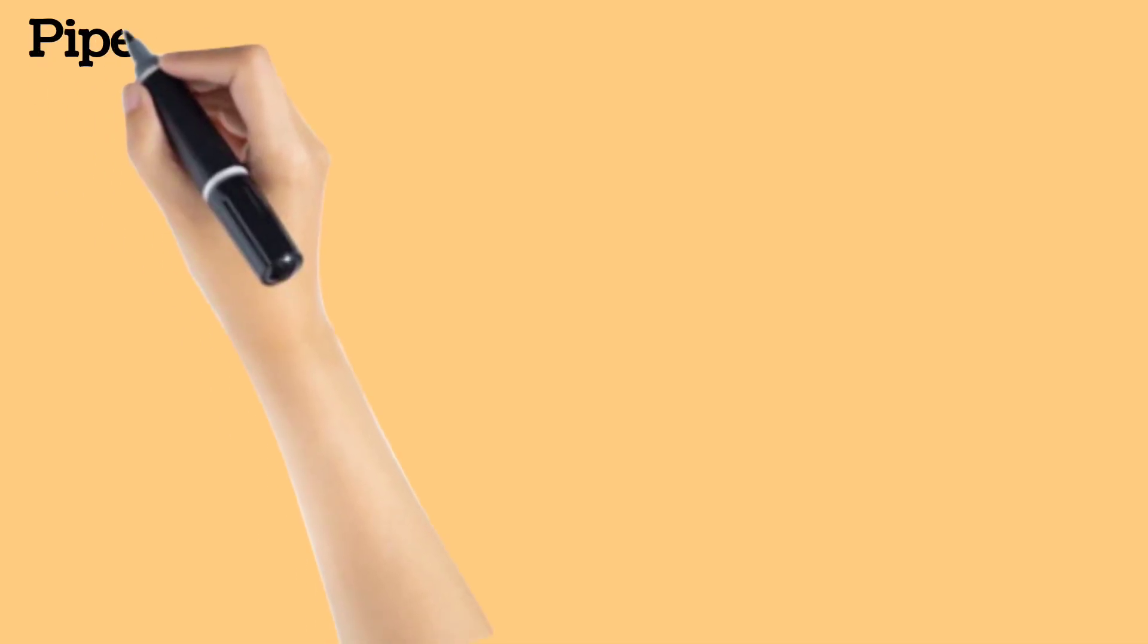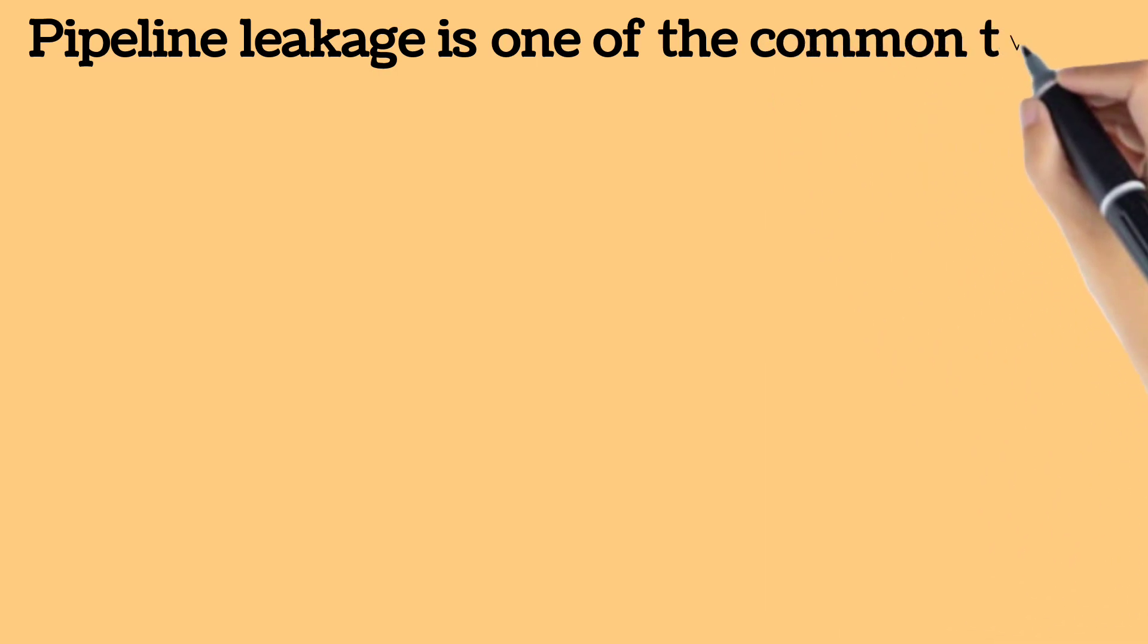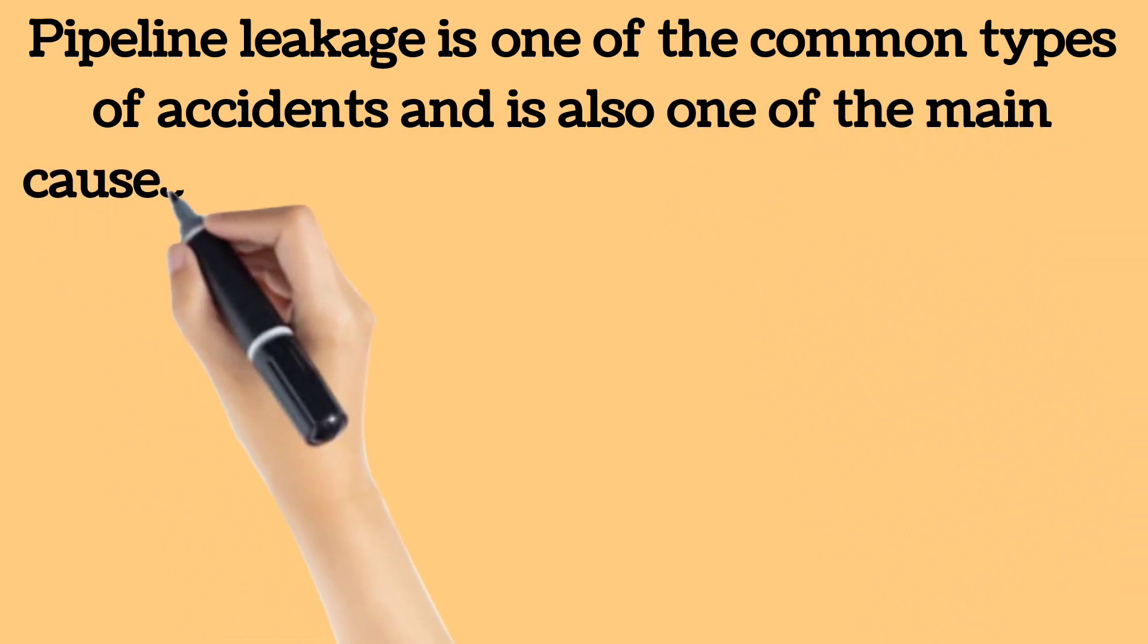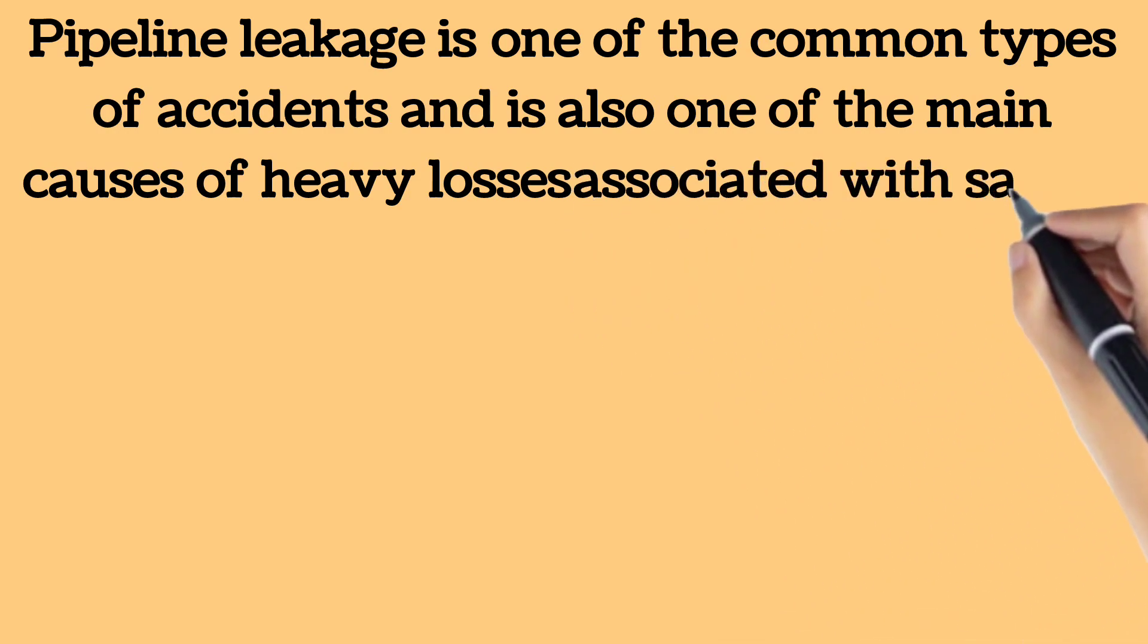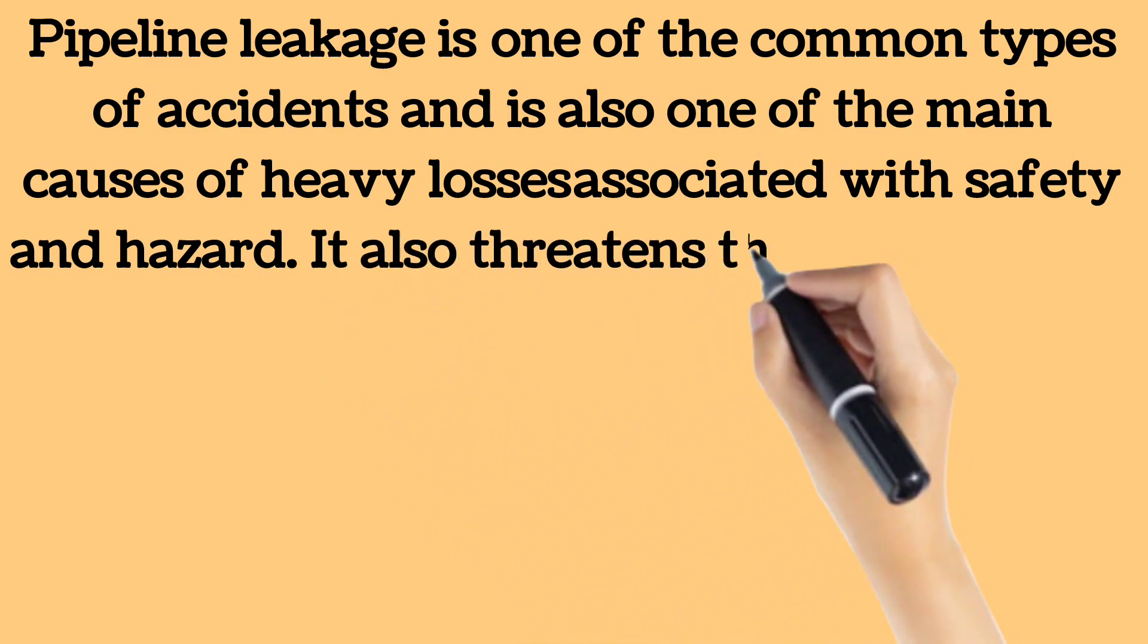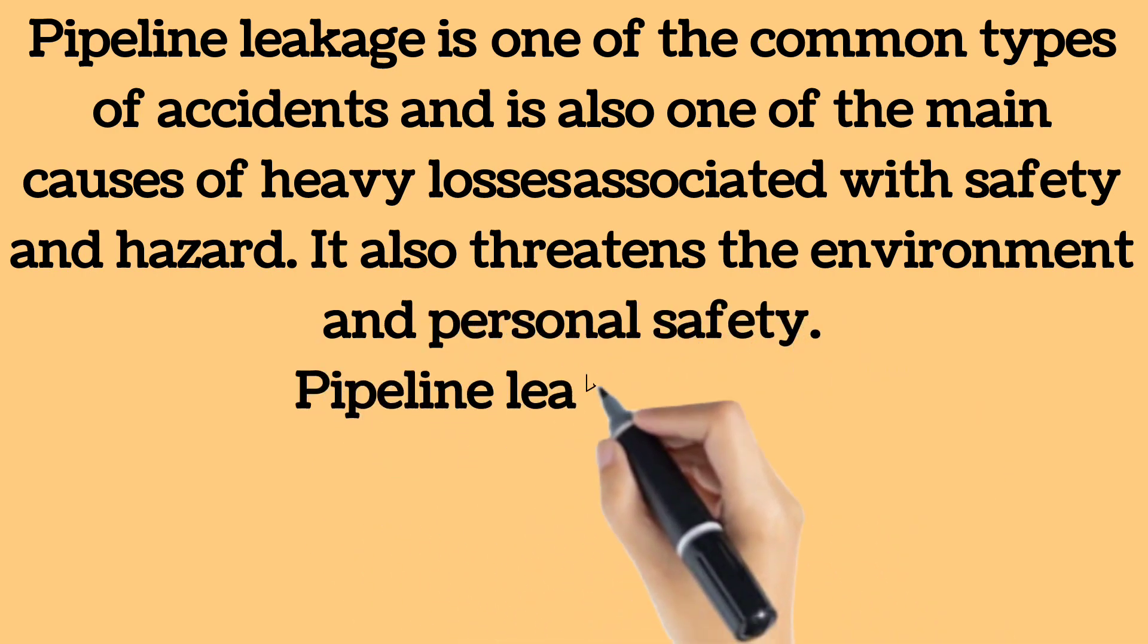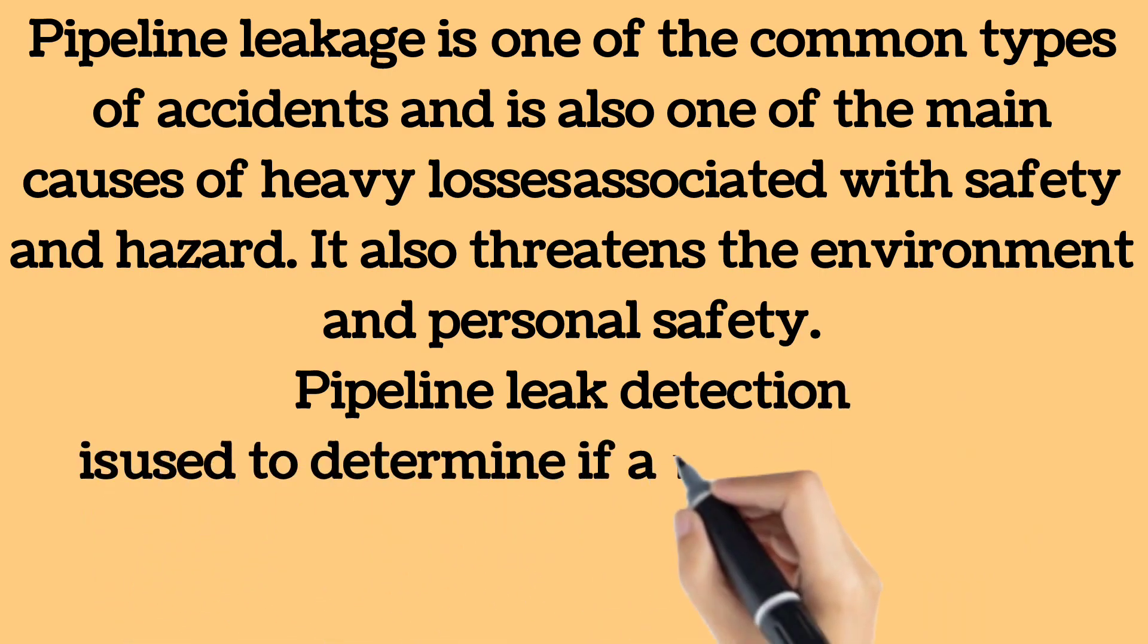Oil and gas pipeline leakage is one of the common types of accidents and is also one of the main causes of heavy losses. The leakage accident not only affects the normal operation of the pipeline, but also threatens the environment and personal safety. Pipeline leak detection is used to determine if and in some cases where a leak has occurred in systems which contain liquids and gases. Methods of detection include hydrostatic testing, infrared, and laser technology after pipeline erection and leak detection during service.